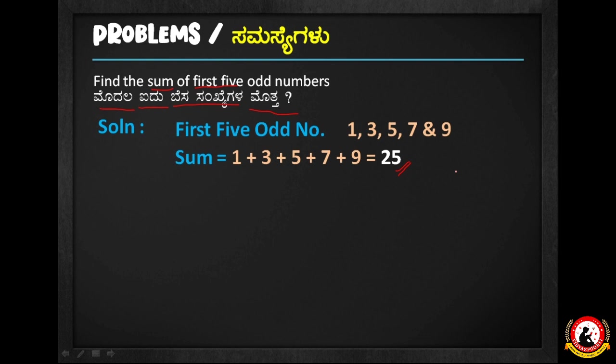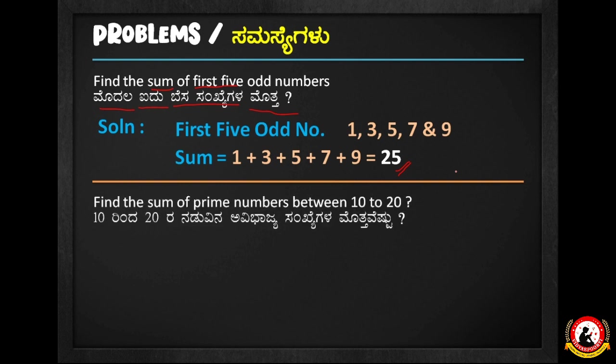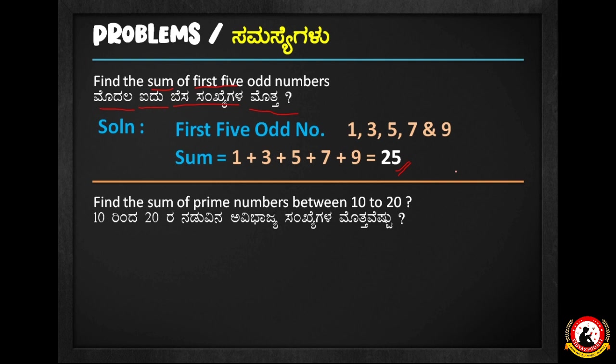First five odd numbers are 1, 3, 5, 7, 9, and 11. Wait — the correct first five odd numbers are 1, 3, 5, 7, 9. The sum is 25. Perfect.